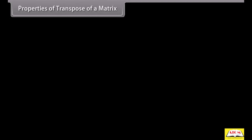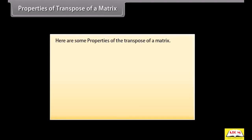Properties of transpose of a matrix: First, transpose of transpose of matrix A is equal to matrix A. Second, transpose of (A ± B) is equal to transpose of A plus or minus transpose of B, if A and B are M by N.